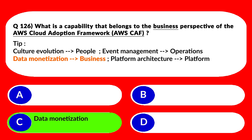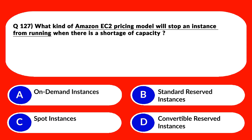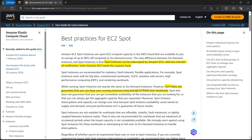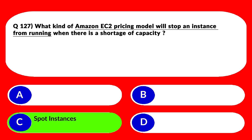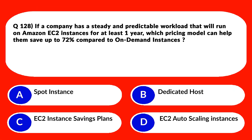This is a straightforward question. We use EC2 spot instances when workloads can be interruptible, since spot instances can be stopped at any time. Option C, spot instance, looks good because the question states the models will stop an instance from running. Looking at the documentation: spot instances can be interrupted by Amazon EC2 with two minutes of notification when EC2 needs the capacity back. Spot does not guarantee you can keep your running instances long enough to finish workloads. Lock option C as the correct answer.